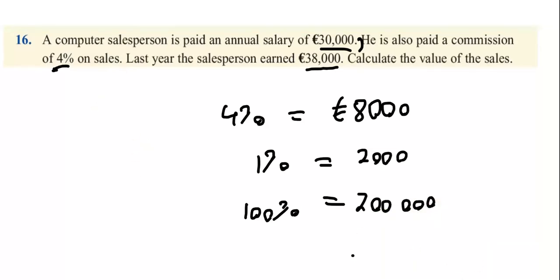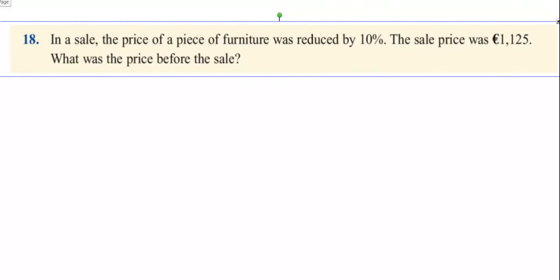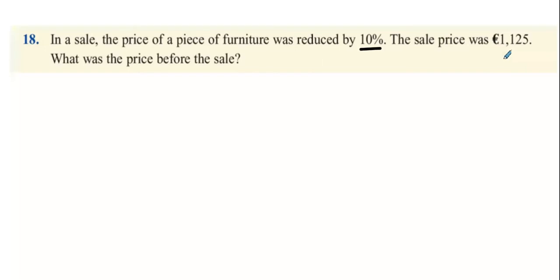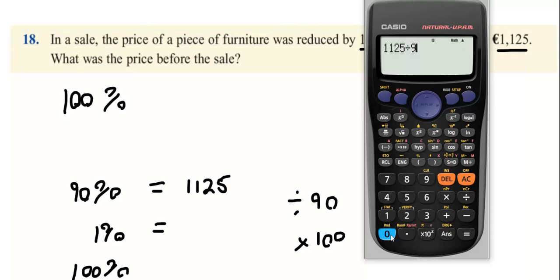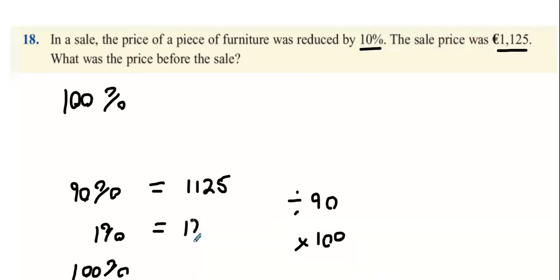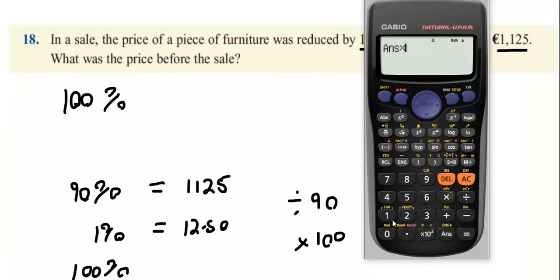Question 18: In a sale, the price of furniture was reduced by 10%. The sale price was €1,125. What was the price before the sale? Before the sale it's 100%, when reduced by 10% you end up on 90%. So 90% was €1,125. Divide by 90 to find 1%, which is €12.50, then multiply by 100 to get €1,250.